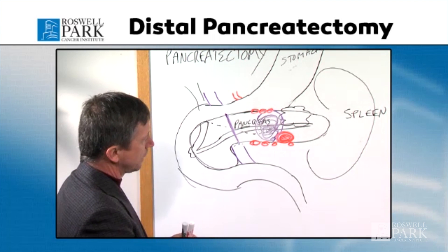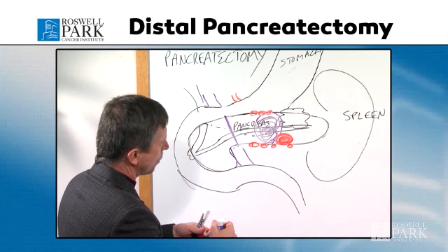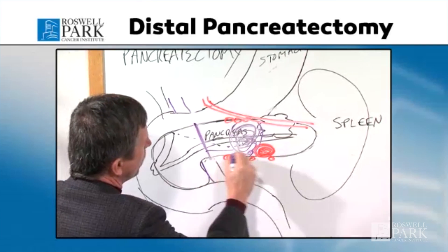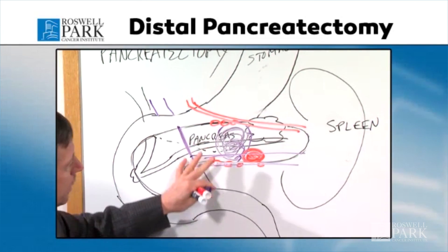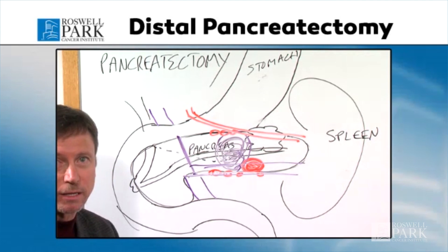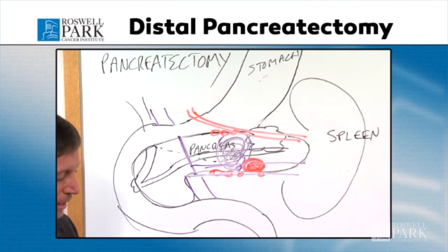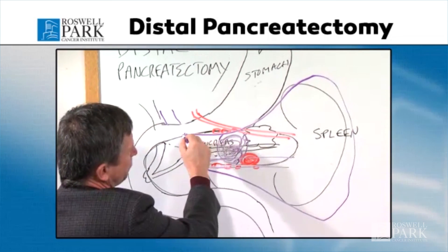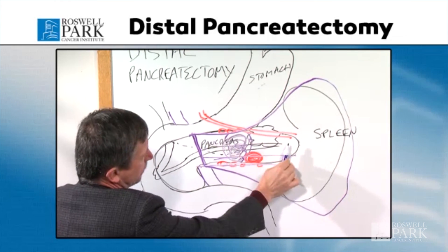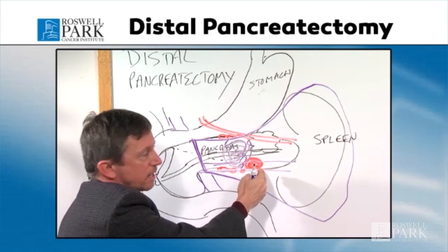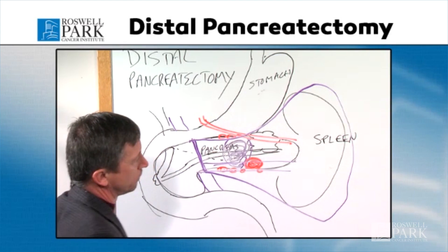The other reason the spleen often has to be removed is because the blood vessels that go to the spleen — the artery and the vein — run right behind the pancreas. In order to get the tumor out and remove the lymph nodes, you would have to remove those vessels, and obviously if the spleen doesn't have blood flow it can't survive. So basically we would be removing this area here, including the neck, body, and tail of the pancreas and the spleen. If there's a small tumor on the very tail, we may just remove that section, but in general this would be the distal pancreatectomy.